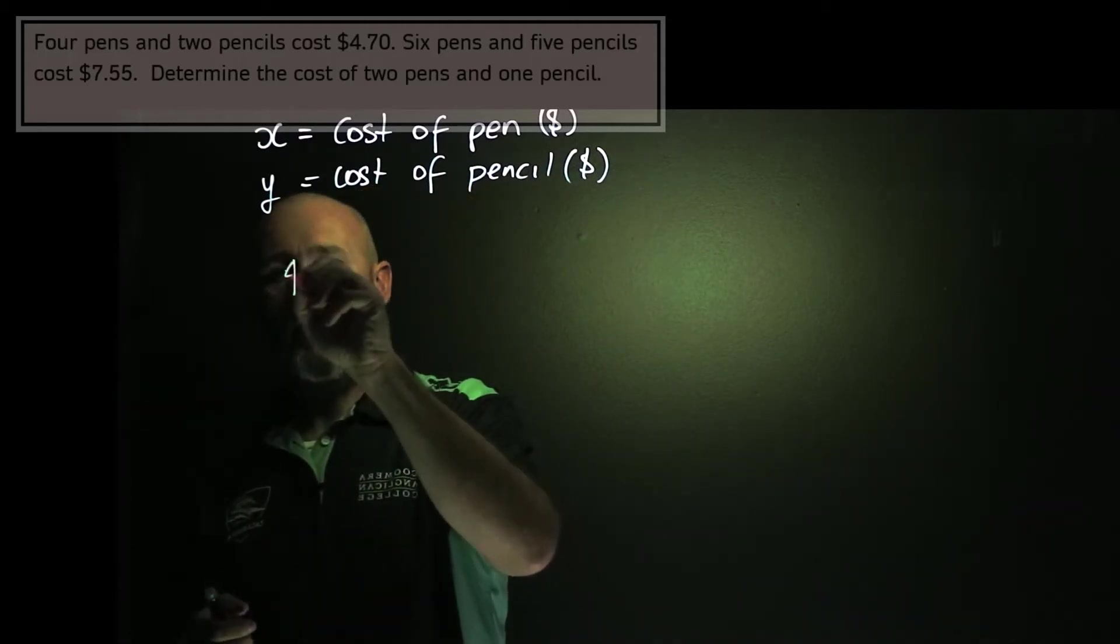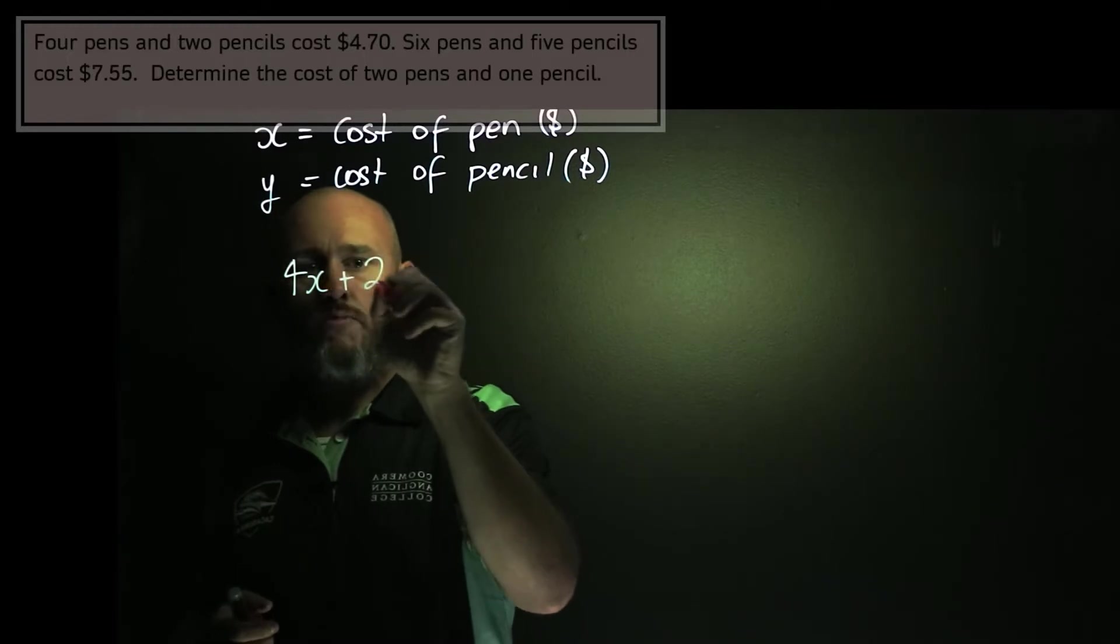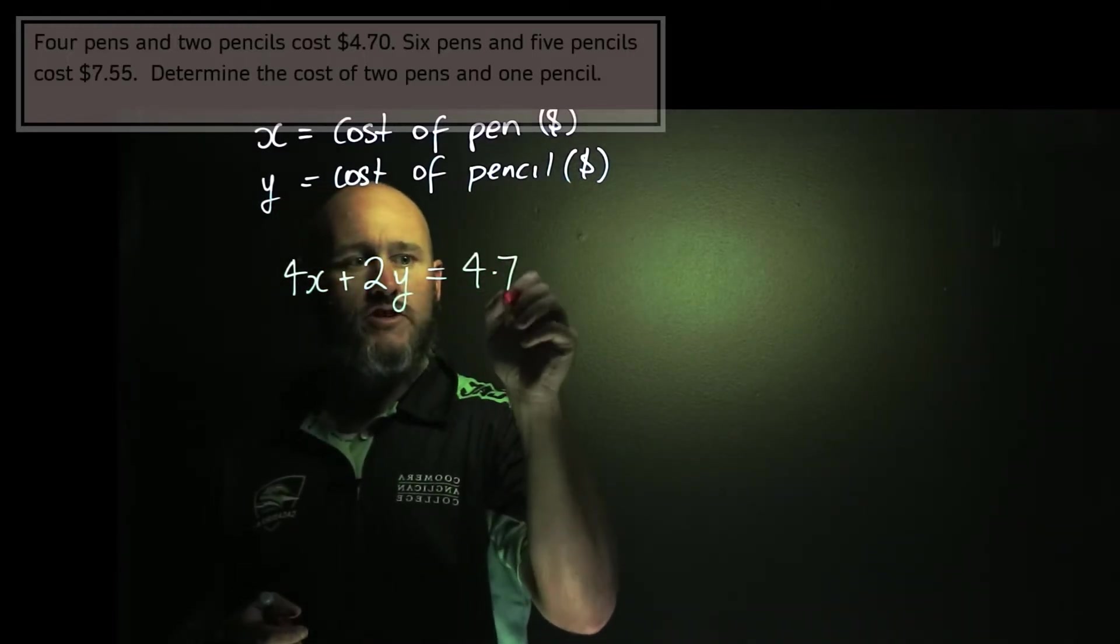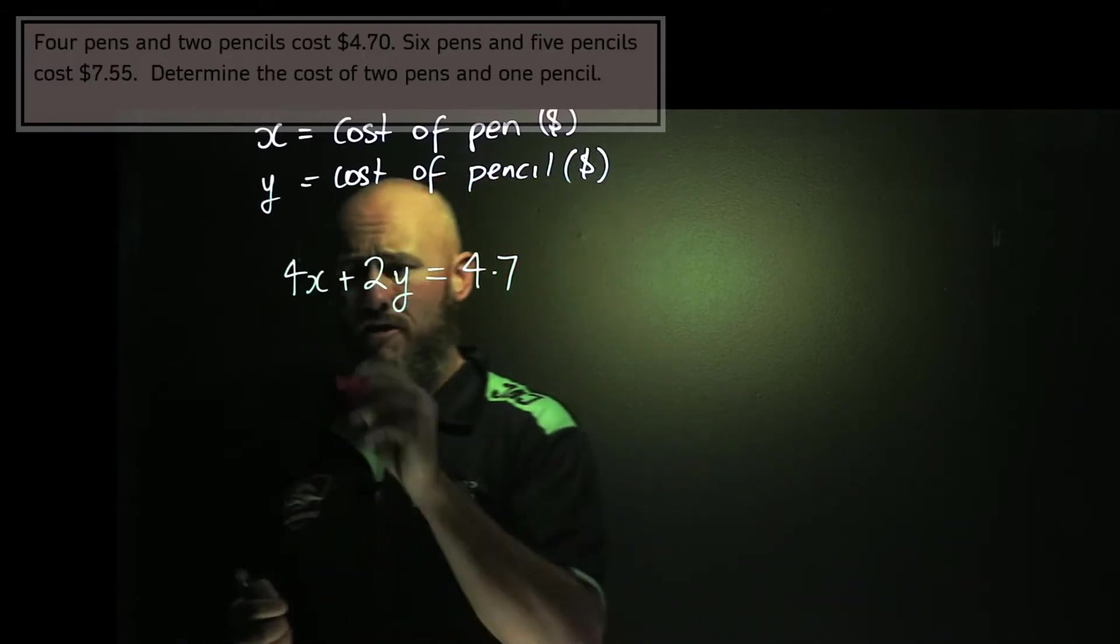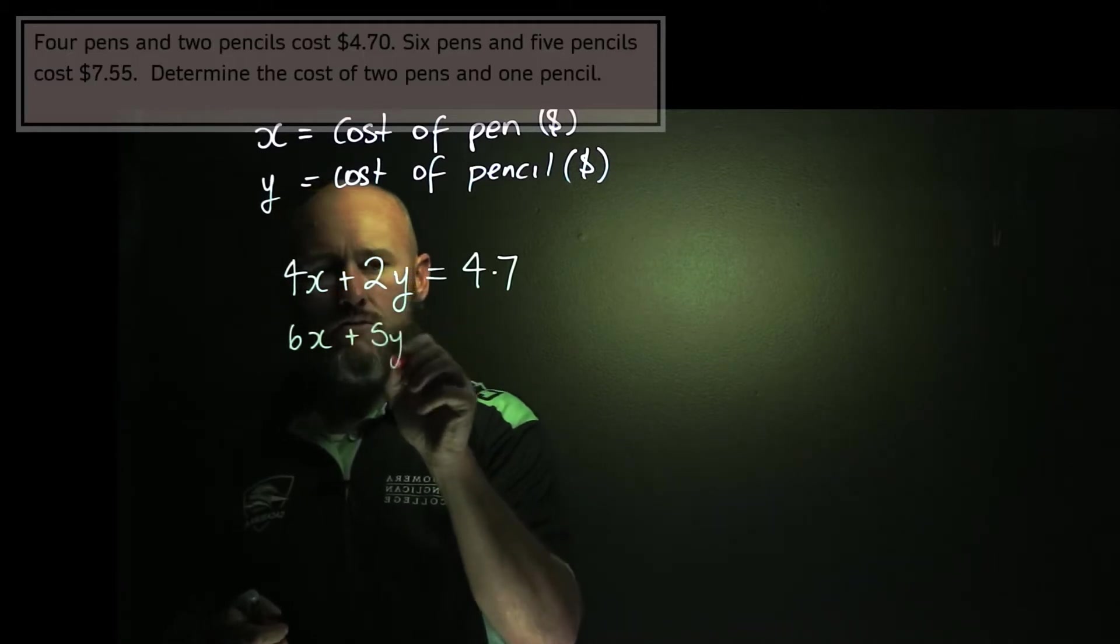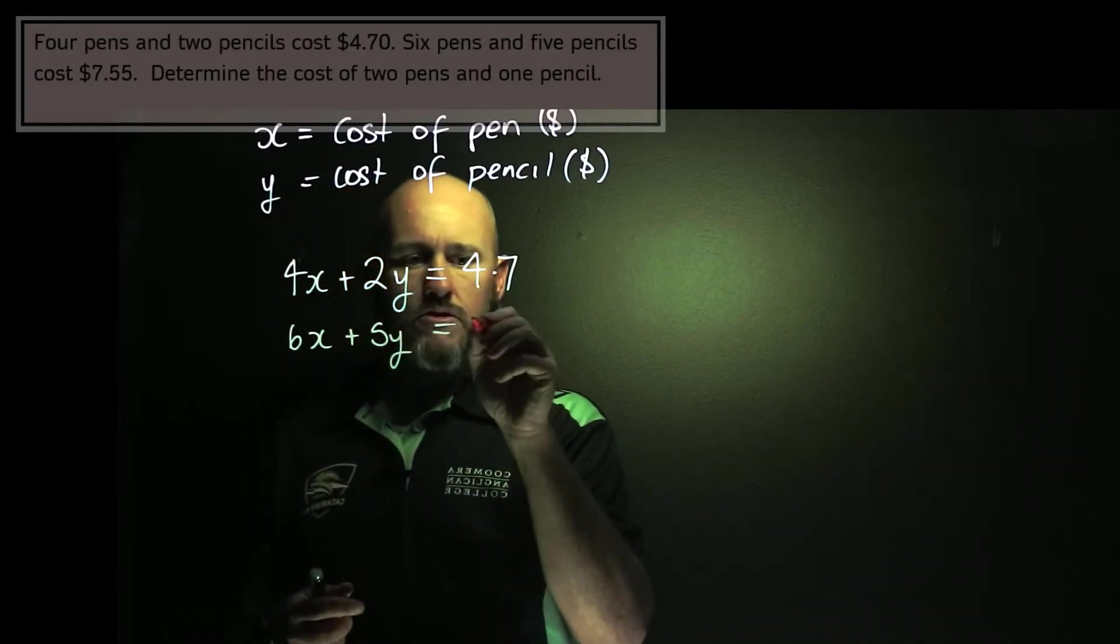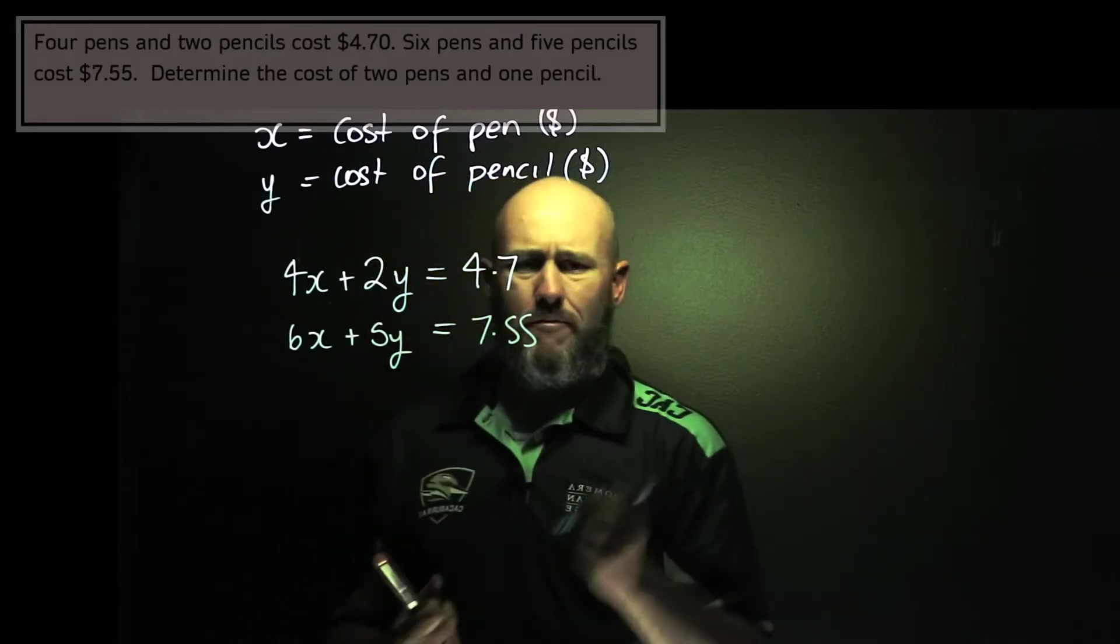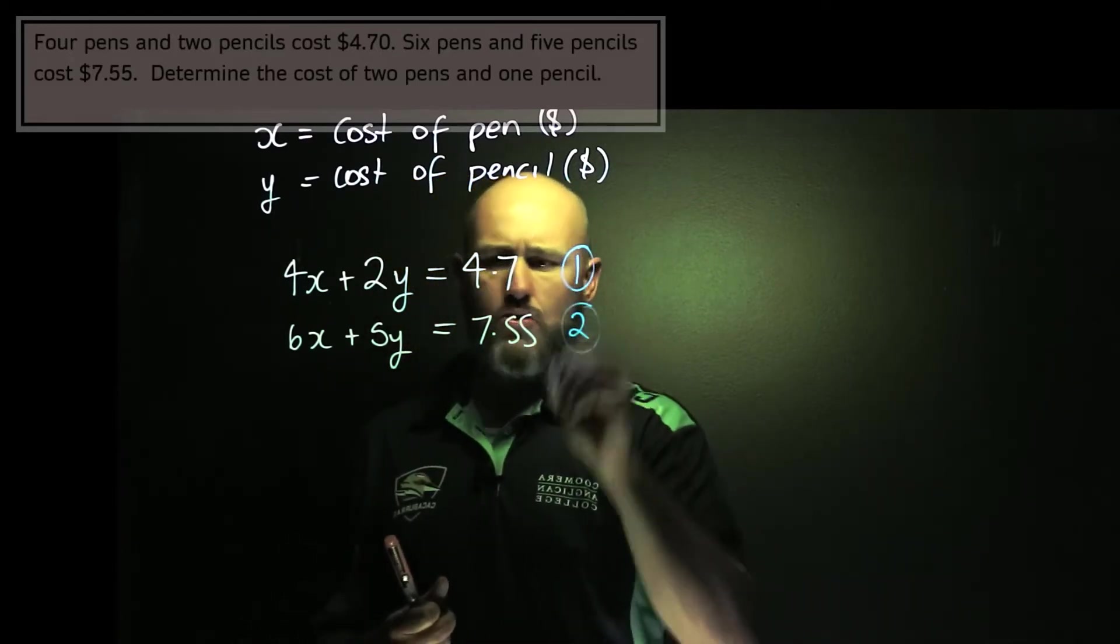And now I'm going to set this up. The cost of four pens and two pencils, which is Y, is equal to $4.70, which is just 4.7 for solution purposes. And the cost of six pens and five pencils is equal to $7.55. And now we solve. So this is equation one and this is equation two.